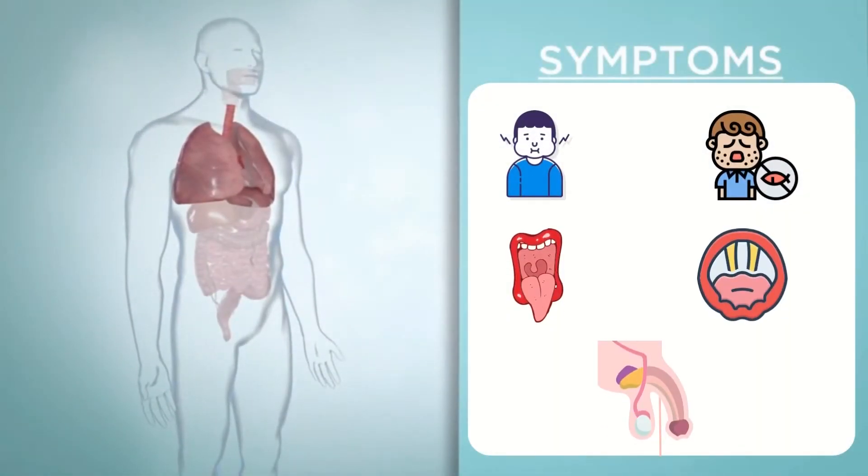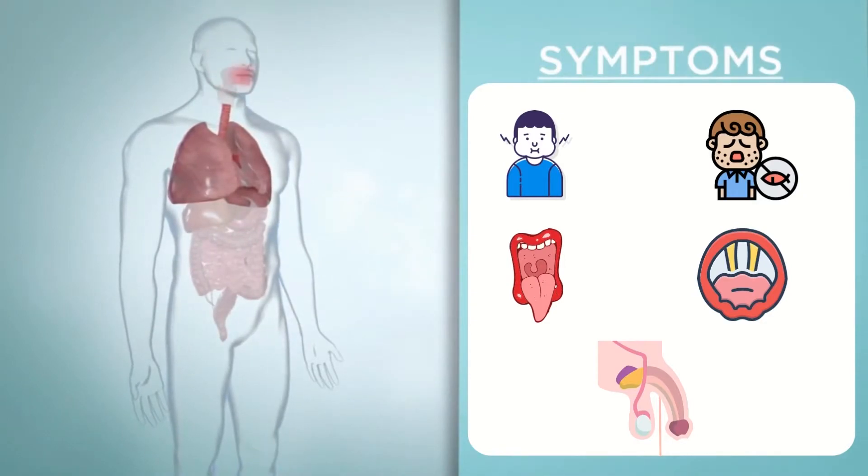Some of the symptoms you may get with angioedema include swelling in the face, mouth, tongue, back of the throat, vocal cords, and genitals.